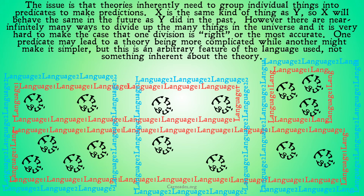The issue is that theories inherently do need to group individual things into predicates to make predictions: X is the same kind of thing as Y, so X will behave the same in the future as Y did in the past. However, there are near infinitely many ways to divide up the many things in the universe, and it's very hard to make the case that one division is right or the most accurate. One predicate may lead to a theory being more complicated, while another might make it simpler, but this is an arbitrary feature of the language used, not something inherent about the theory.